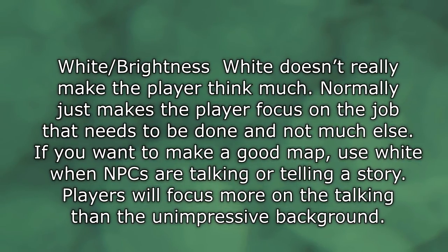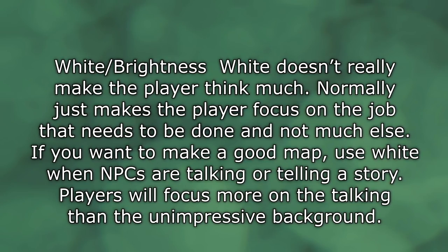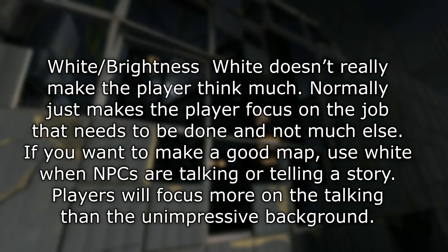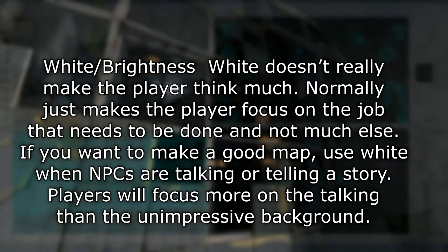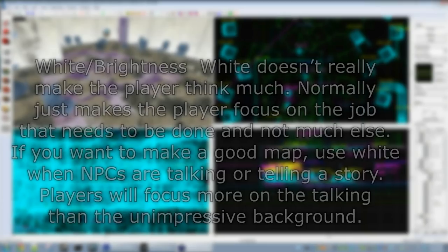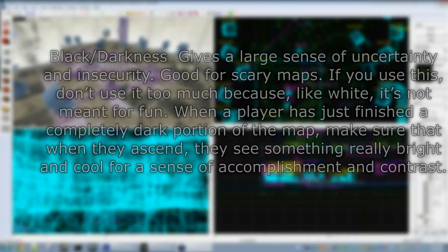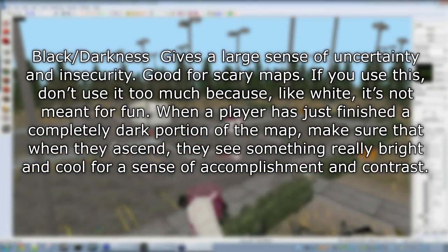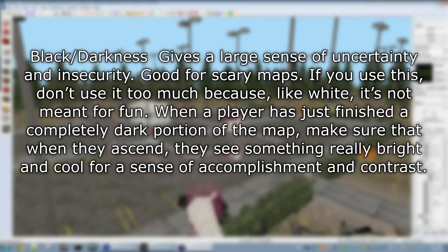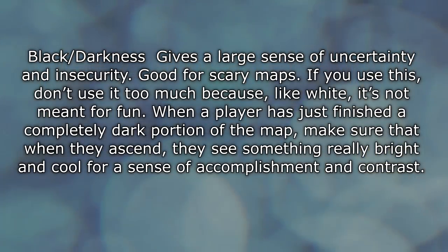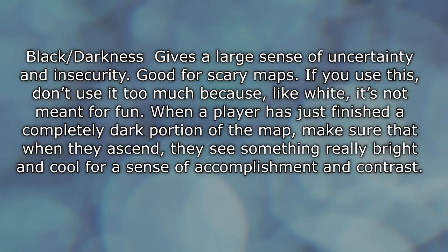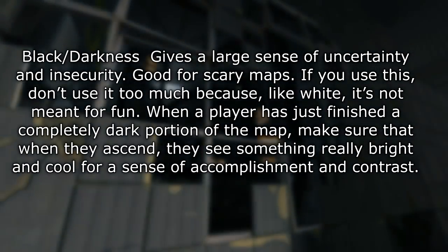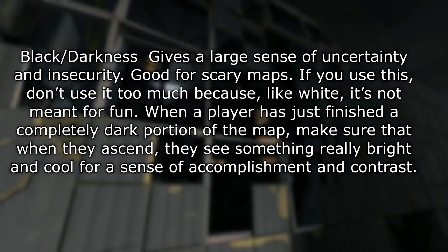A bright outside area, or just a generally lit area with a slight yellow tint — the player usually doesn't think too much; it's mellow lighting. Use this when you want the player to focus on a story an NPC is telling or pay attention to something. Black and darkness is a very important part of all levels — you can't show light without dark, since dark is just the absence of light. It's great for scary maps or to give the player insecurity. Don't use it too much, because players typically don't have fun when they're uncertain of what's going to happen.